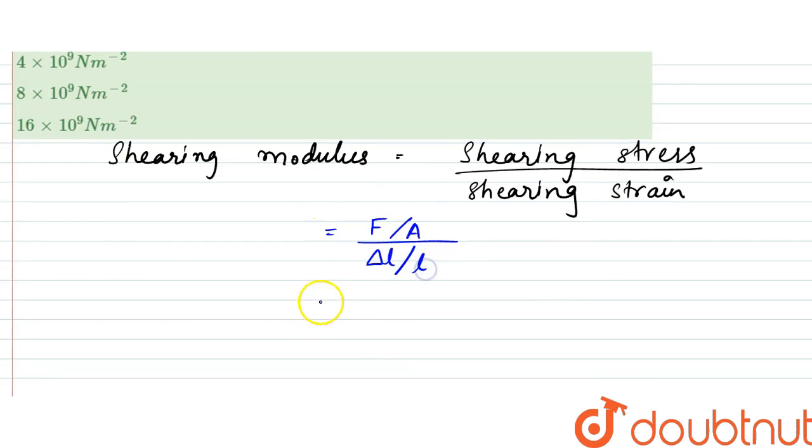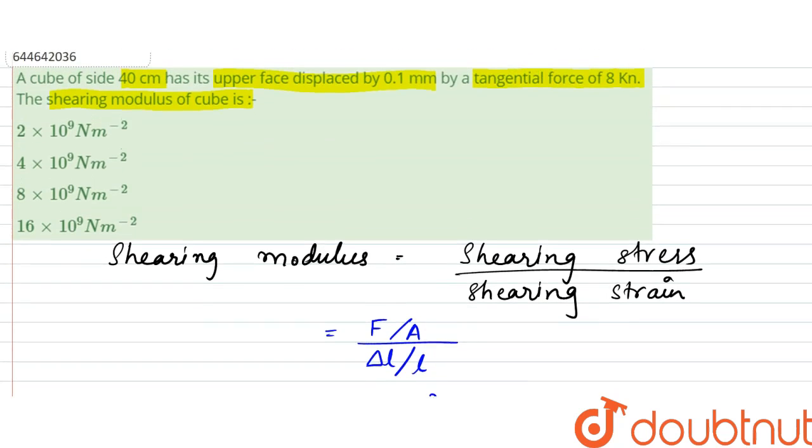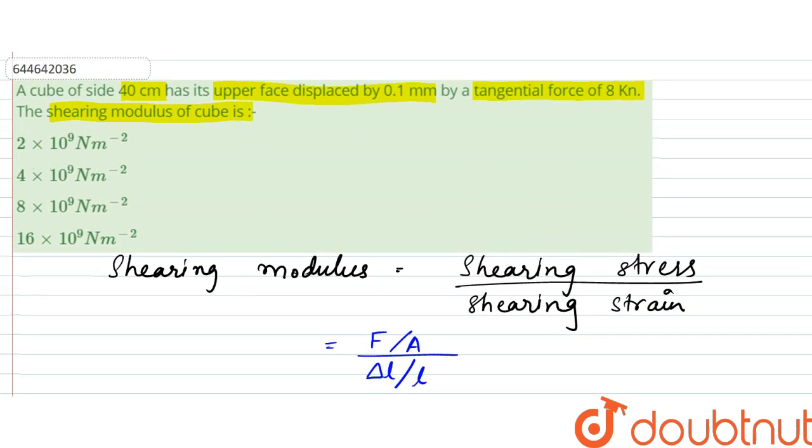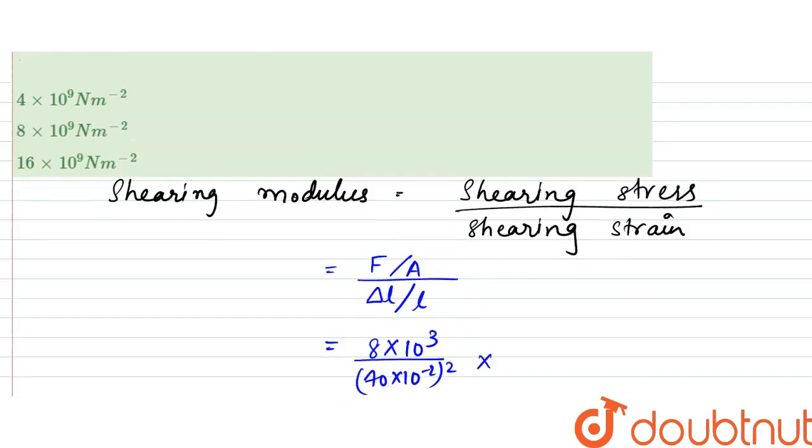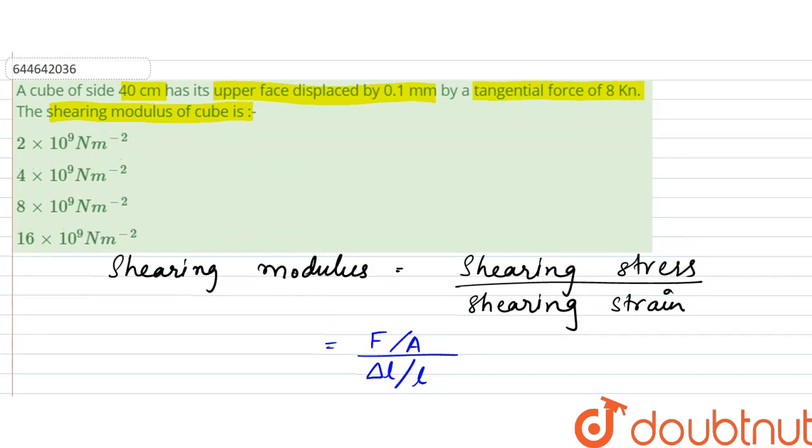So that would be: force is 8 kilonewtons, 8 × 10³ newtons, divided by area. The area of the cube's face is the side squared, so that would be equal to 40 × 10⁻² meters squared, times L by delta L.